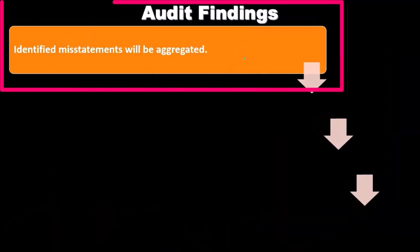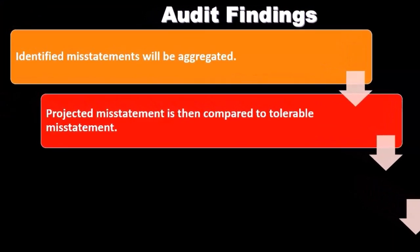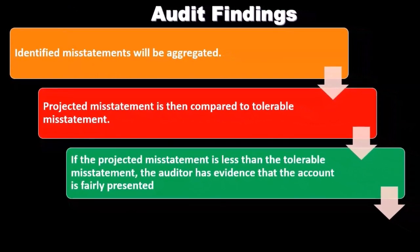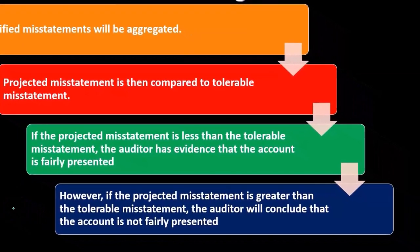For audit findings, identified misstatements will be aggregated, and the projected misstatement is then compared to the tolerable misstatement — the level of misstatement the auditor is willing to accept. If the projected misstatement is less than the tolerable misstatement, the auditor has evidence that the account is fairly presented. However, if the projected misstatement is greater than the tolerable misstatement, the auditor will conclude that the account is not fairly presented.